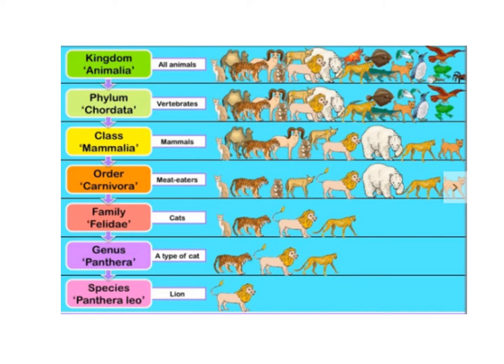Then it goes further into the class of animal — we're looking at mammals. Then further into mammals: what kind of mammals are they? They are carnivores, so they're meat eaters. So now we end up with just the animals that are vertebrates, mammals, and meat eaters. Then we go further down into the family — here we're looking at cats — and then the genus, which is the specific type of cat, and then even more specific to the species, and we end up with lion.